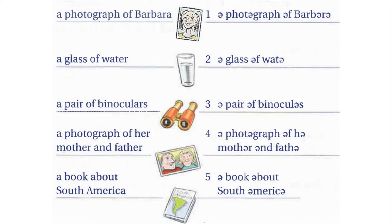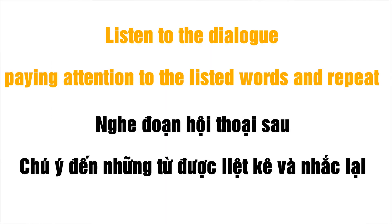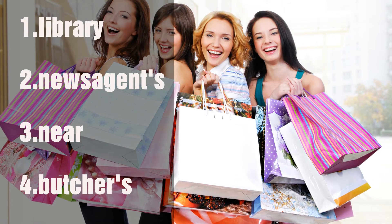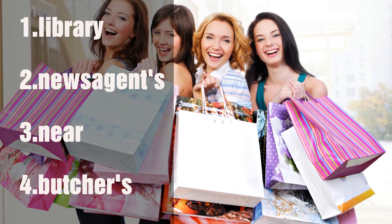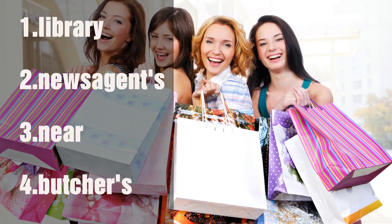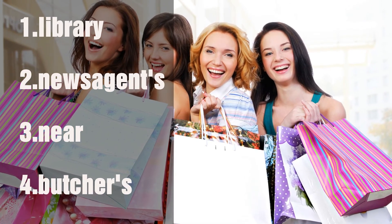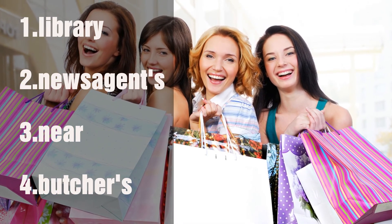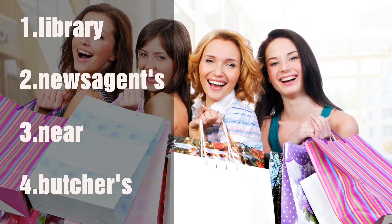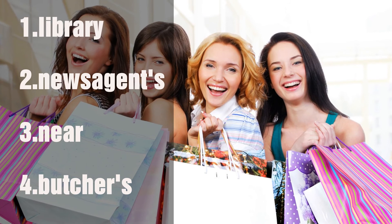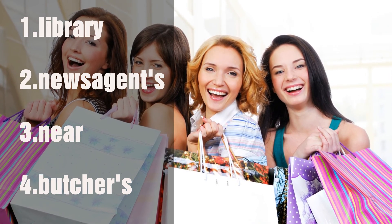Look at the clock. What's the time? It's six o'clock. It's a quarter to seven. I'm going to the library. Can you buy something for me at the newsagent's? But the newsagent's is a mile from the library. No, not that newsagent's — not the one that's next to the fish and chip shop. I mean the one that's near the butcher's. Oh yes. Well, what do you want? Some chocolates and a tin of sweets and an address book.